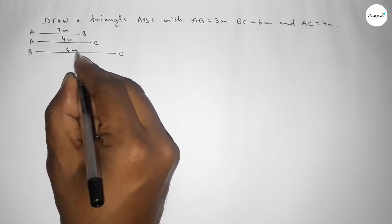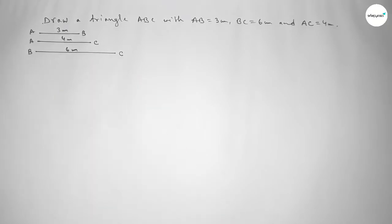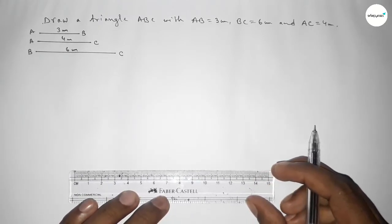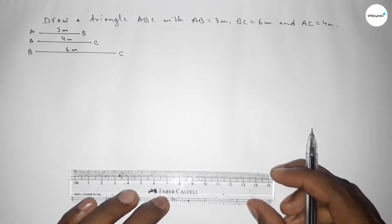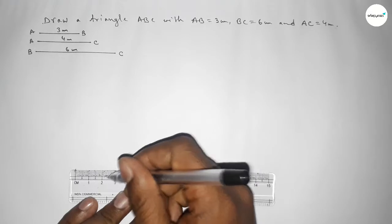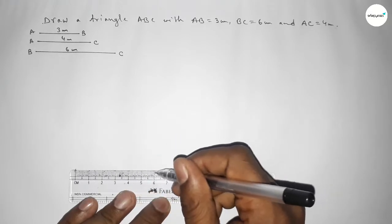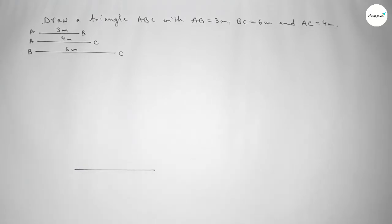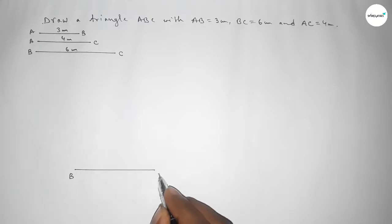Now we draw a line of length six centimeters, starting from zero to six centimeters. We mark point B at one end and point C at the other end.